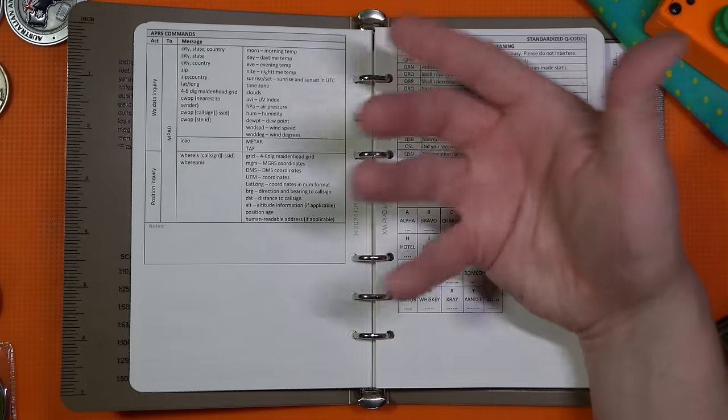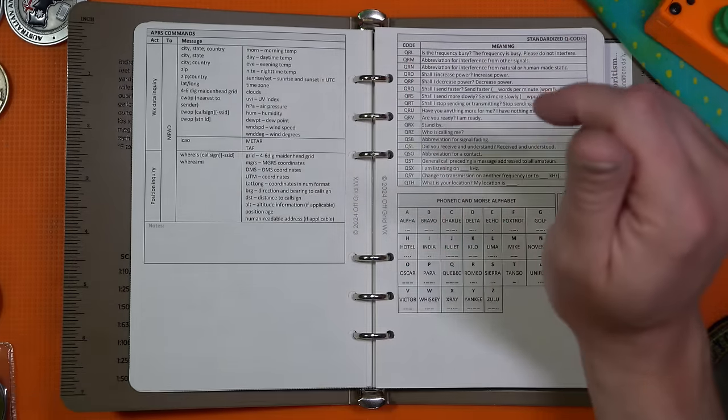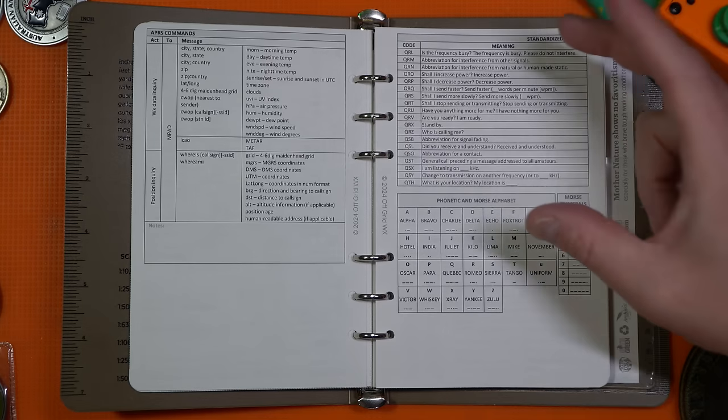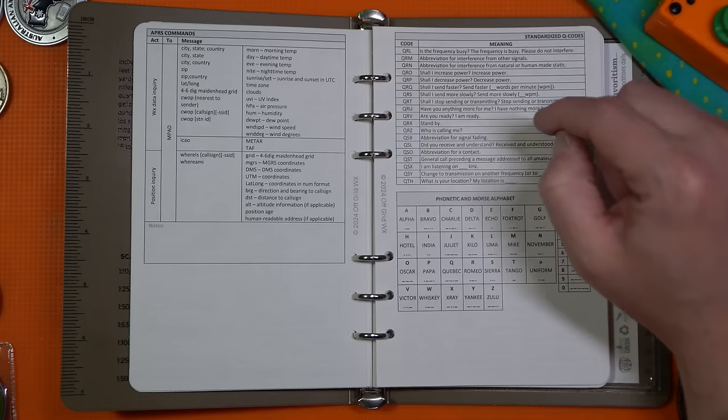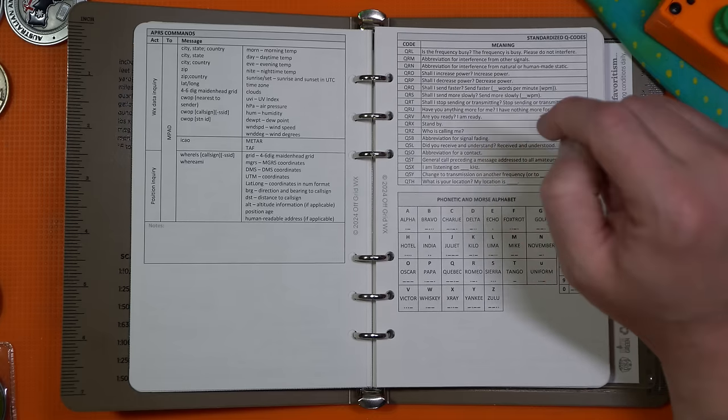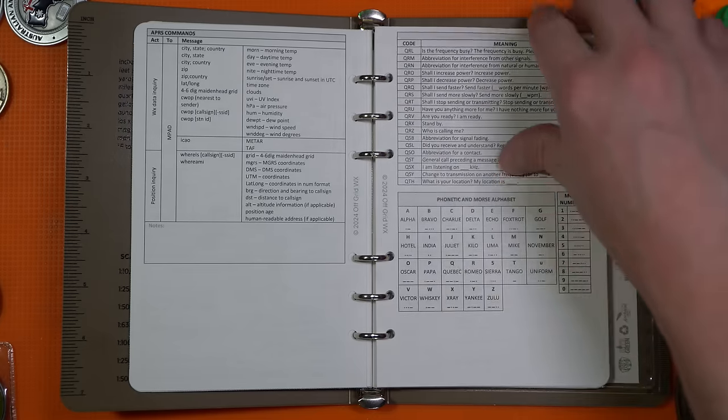Of course, expectation is you can hit a digipeter because that's not always the case. Weather data, position inquiry. And then here's a list of common Q codes. QRZ, who's calling me? QRO, abbreviation of QSO is abbreviation of a contact. QSL, QSL is just a confirmation.